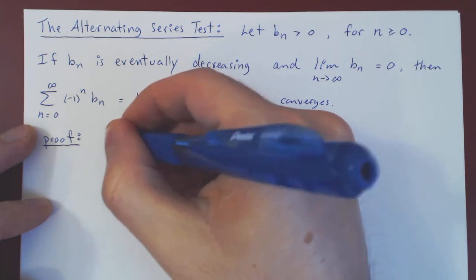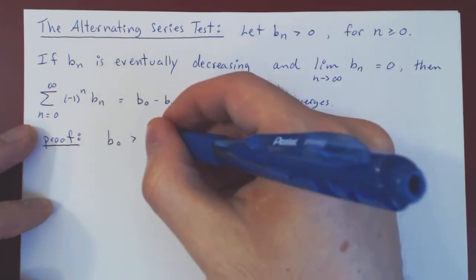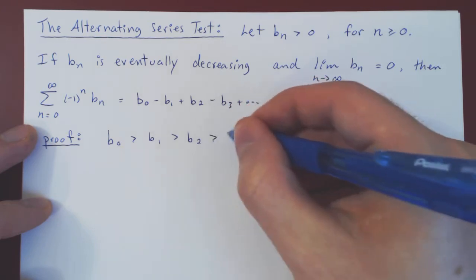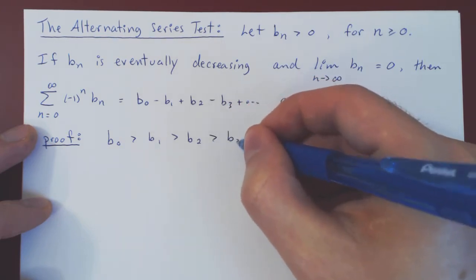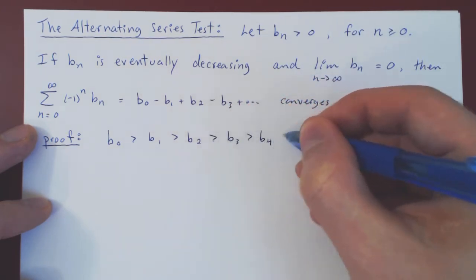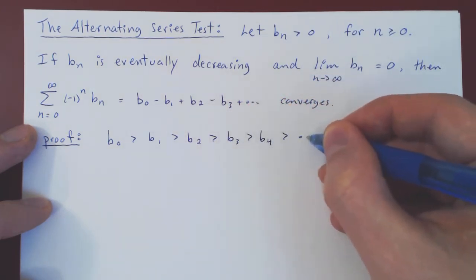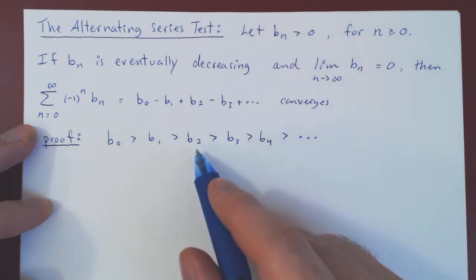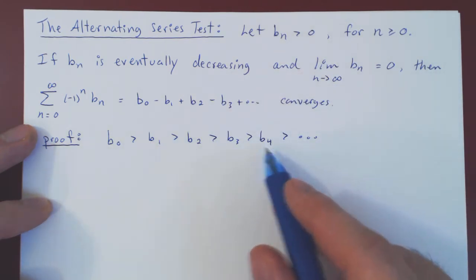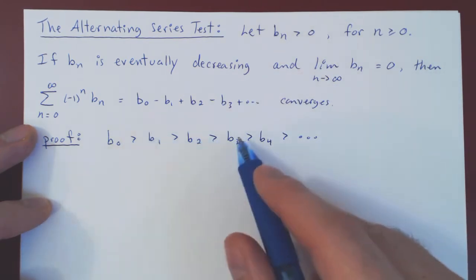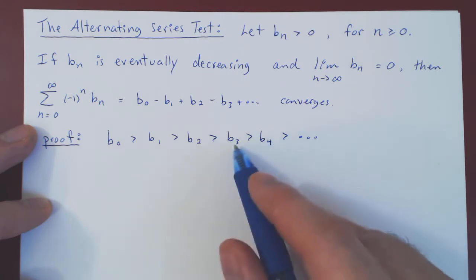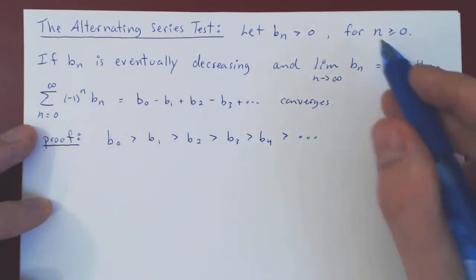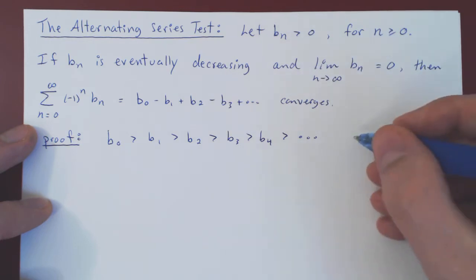So B0 is larger than B1, larger than B2, larger than B3, larger than B4, and so forth. As we move further and further down our sequence, the terms are getting smaller and smaller, and all the terms of our sequence are strictly positive.